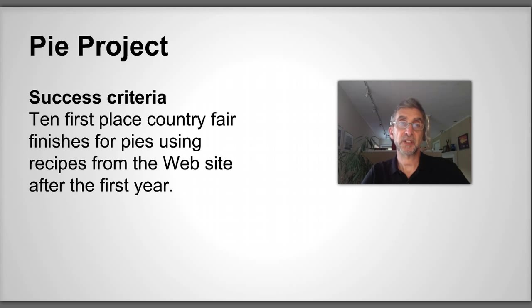Success criteria. The problem with a criteria like this for something which has a social media component is that you won't be able to measure success until way after the project's done. But my success criteria, so you understand what success is, is 10 first place county fair finishes for pies using recipes from the website after the first year. So it's measurable and it's verifiable.